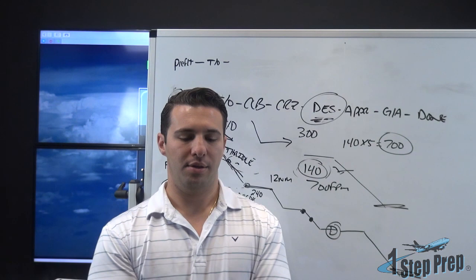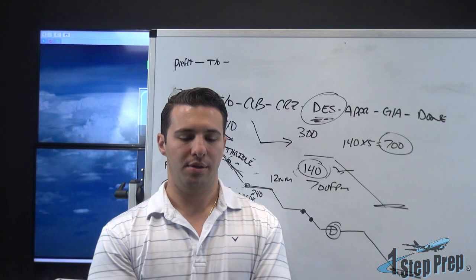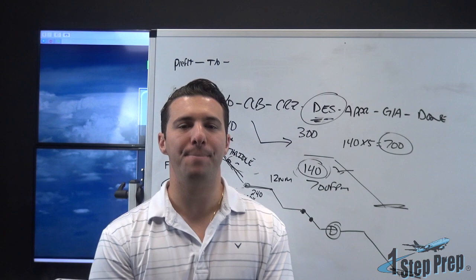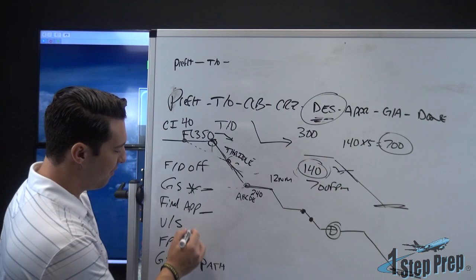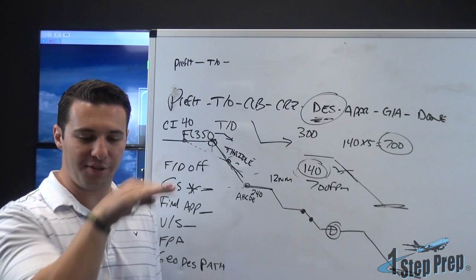When you're in an FMA mode that is a constant pitch, like Final Approach - Final Approach is basically a glide slope. What else is a constant pitch? Vertical speed. Why? Because you're telling it how much vertical speed to maintain, which is fixed.